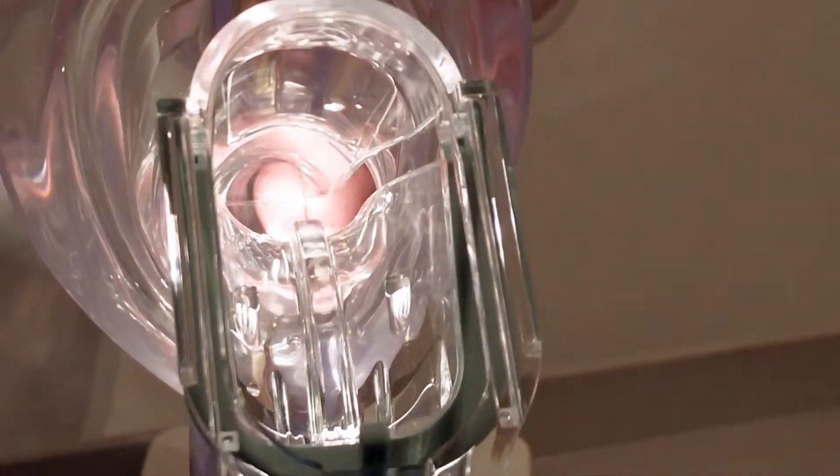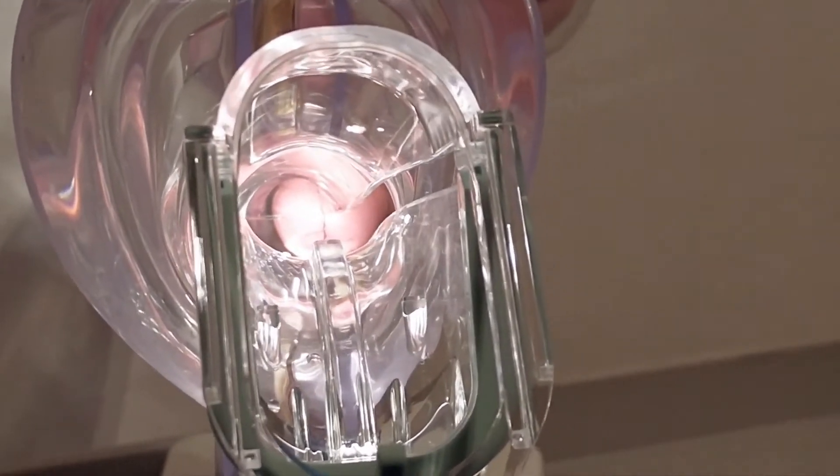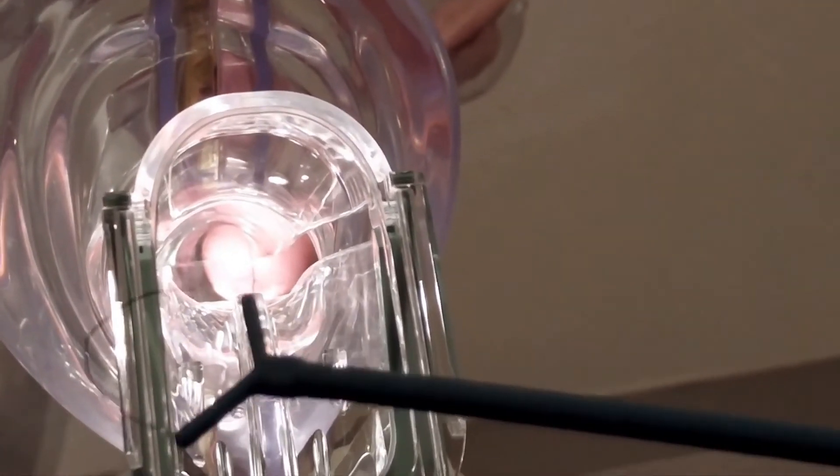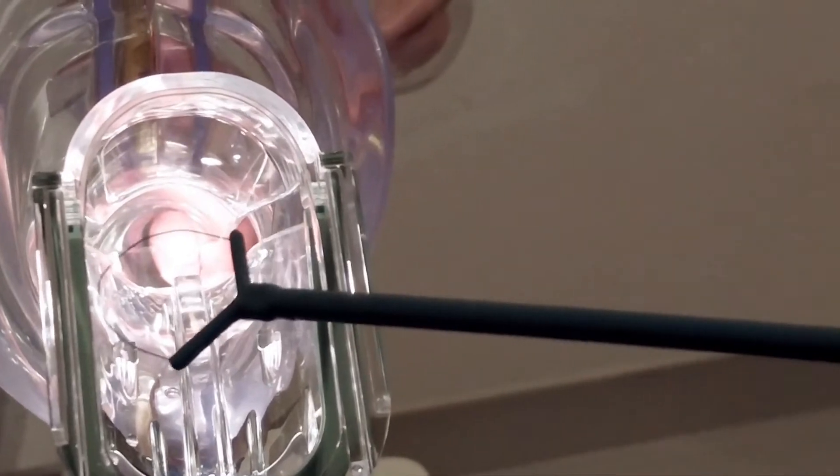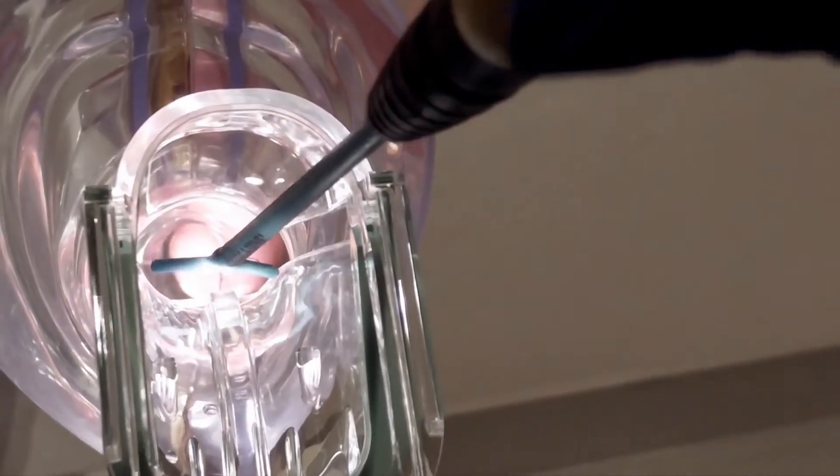It's four little injections that will numb the area and then we use a little loop just like that that is attached to a device called diathermy and that loop goes in and removes abnormal cells.